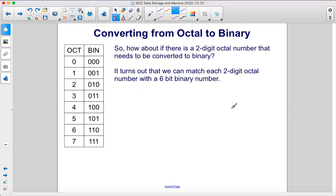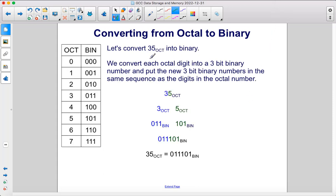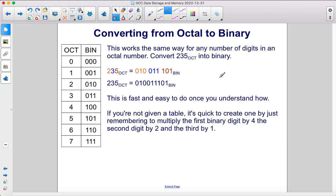So how about if there's a 2-digit octal number that needs to be converted to binary? It turns out that we can match each 2-digit octal number with a 6-bit binary number. Let's convert the number 35 in octal into binary. We convert each octal digit into a 3-bit binary number and put the new 3-bit binary numbers in the same sequence as the digits in the octal number. The octal number 3 is 011 in binary, so we replace 3 with 011 in binary. 5 is 101 in binary, and so here we have our 2 3-digit binary numbers, and then we just put them back together. Therefore, 35 in octal is 011101 in binary.